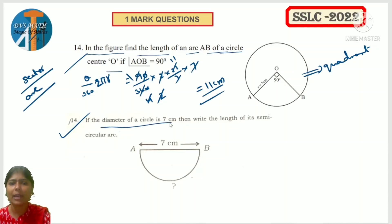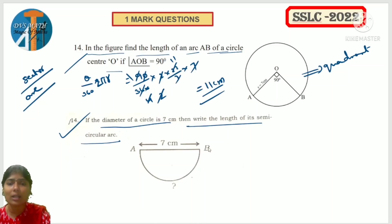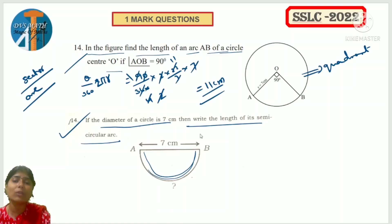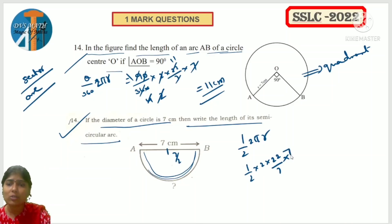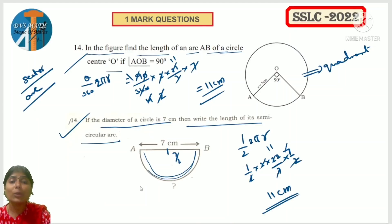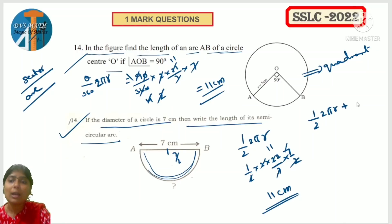Another type: the diameter of a circle is 7 cm, find the length of its semicircular arc. Semicircular arc length is half of 2πr. So: (1/2) × 2 × (22/7) × (7/2). Simplifying: 7 and 7 cancel, 2 and 2 cancel, giving answer as 11. Know how to calculate semicircle arc length.